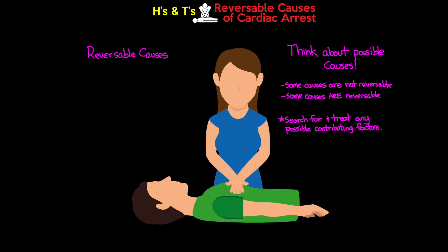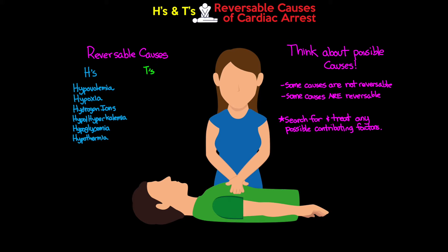We have 11 main reversible causes that you really want to dedicate time and energy into memorizing. Anytime your patient codes, you should be going through this list of possible contributing factors. To aid in remembering these, they've been divided into two groups: the H's and the T's. The H's are six causes — hypovolemia, hypoxia, hydrogen ions, hypo or hyperkalemia, hypoglycemia, and hypothermia. The T's are toxins, tamponade, tension pneumothorax, thrombus, and trauma. Memorize these so you can recall them in a high-stress code situation.